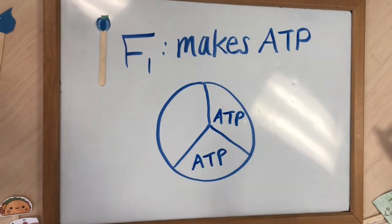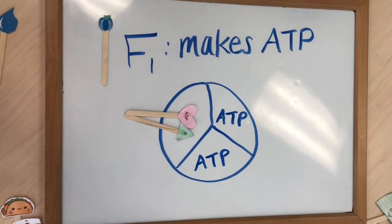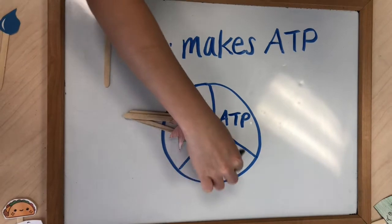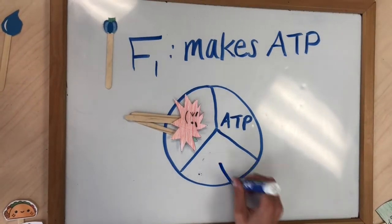ADP and phosphate bind in one unit, which causes ATP to be formed. When this ATP is made, an ATP in another unit is released so you can get energy.